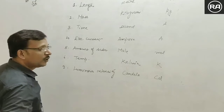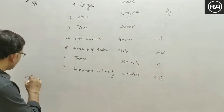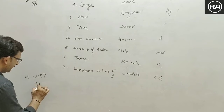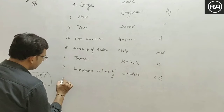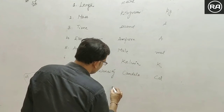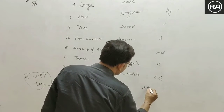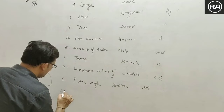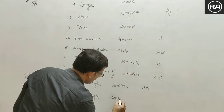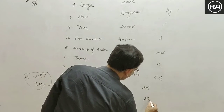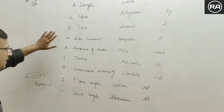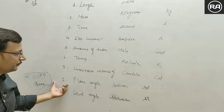Apart from these seven fundamental quantities, there are two more quantities known as supplementary quantities. In supplementary quantities, we have the plane angle, whose SI unit is radian with symbol 'rad', and the second is solid angle, whose SI unit is steradian with symbol 'sr'. So in the SI system there are seven fundamental quantities and two supplementary quantities: plane angle and solid angle.